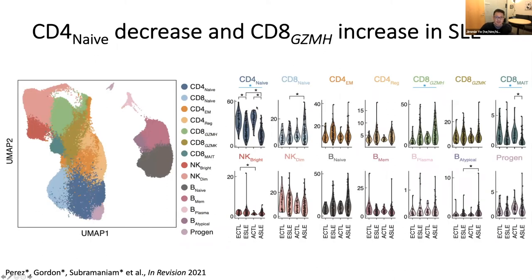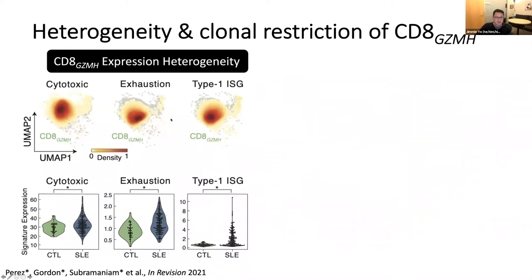If we dig into the lymphocytes further, beyond the depletion of naive CD4s, we also see an expansion of some additional populations, particularly three different subsets of effector CD8 T cells distinguished by the expression of various effector molecules: a Granzyme H population, a Granzyme K population, and a population of mucosal-associated invariant T cells. We were particularly interested in the Granzyme H population because it appears to be increasing in frequency in lupus patients — consistent in both ancestries — and in some patients these cells make up 50% of all lymphocytes in circulation.